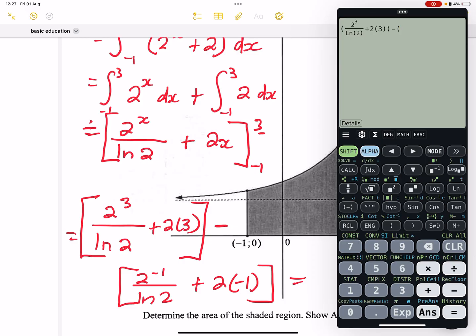That's going to be 2 raised to the exponent of negative 1. Let me rather use the fraction button. 2 raised to the exponent of negative 1. And this is divided by ln 2 again. And we add 2 times negative 1. And please be very meticulous on this. I get a value 18.82.